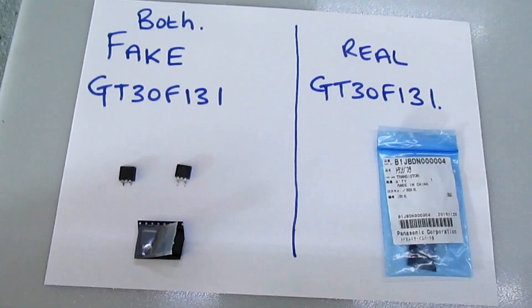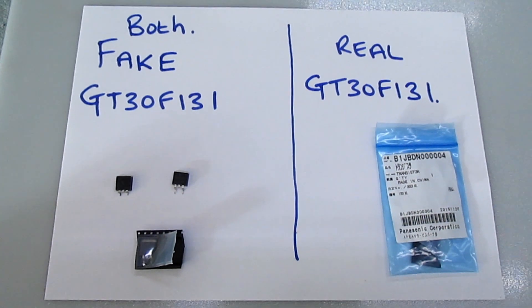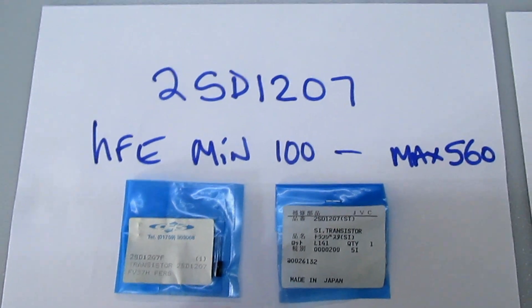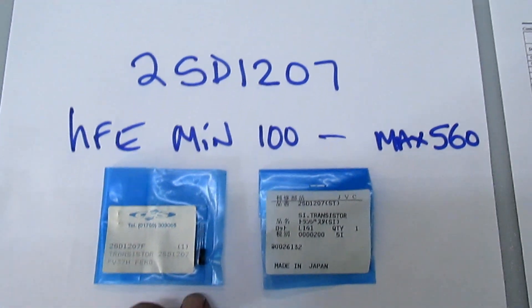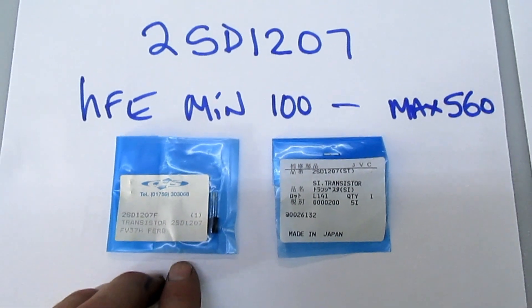We'll start off with bipolar transistors and I'll give you a bit of insight into semiconductor manufacturing. Here we have a 2SD1207, it's an NPN bipolar transistor we used about 15 years ago in video recorders.